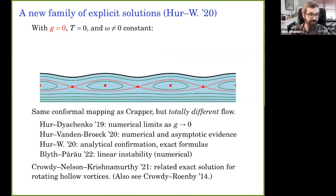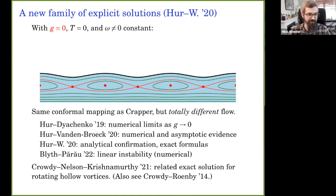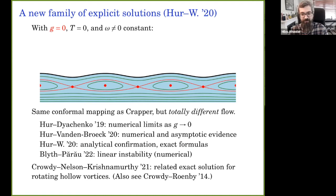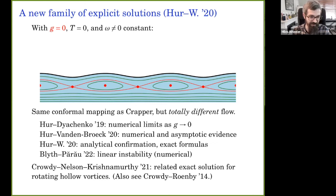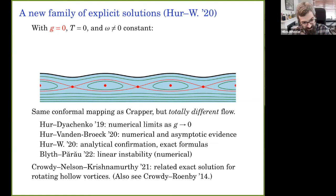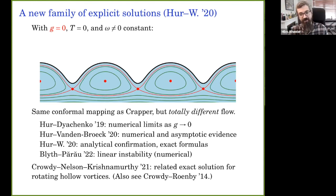What I want to tell you about now is a proof that overhanging waves with vorticity exist, at least in a very special asymptotic regime. The proof has nothing to do with global bifurcation; instead it uses a new family of explicit solutions. Like Crapper waves, these solutions have zero gravity, but instead of surface tension they have constant vorticity as the only effect. The surfaces are exactly the same as Crapper waves — which is actually how they were discovered — but everything else about the problem is totally different, so there's no deep physical connection.